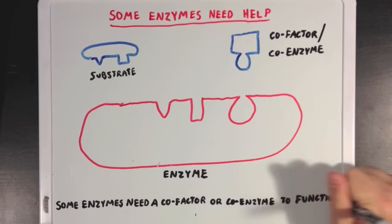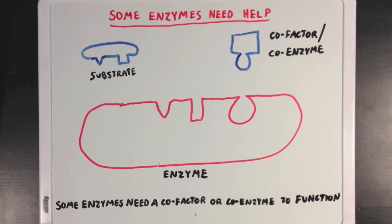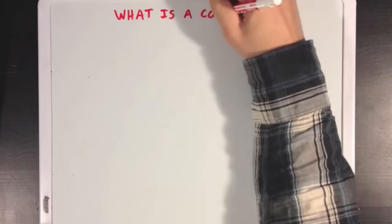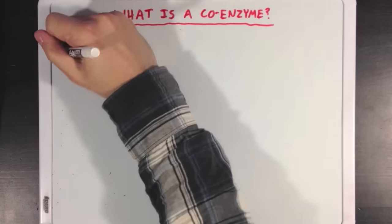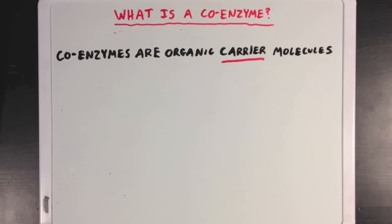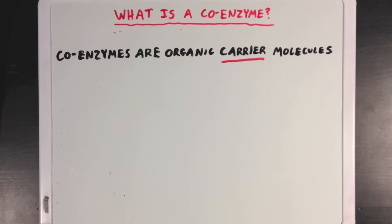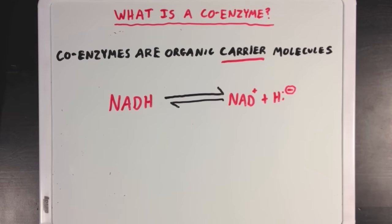We're going to go over what coenzymes and cofactors are, and exactly how they work. So first we'll talk about what a coenzyme is. Coenzymes are organic carrier molecules. By organic, I mean that they're primarily carbon-based molecules. By carrier, I mean that coenzymes hold on to certain things for an enzyme to make the catalysis run a little more smoothly. A great example of a coenzyme is NADH, which acts as an electron carrier.